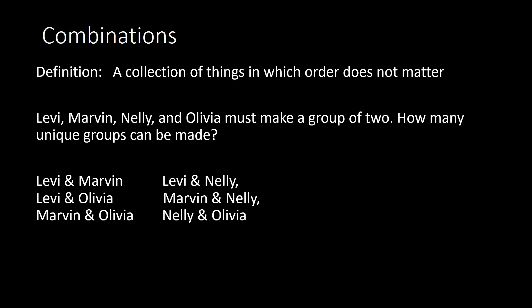We could list all of the possibilities out like we just did, but the objective is to use mathematics to get our solution. I think: I have two people I'm choosing — for the first person, I have four people to choose from: Levi, Marvin, Nellie, or Olivia. So I have four people I can choose first, and then three options to pair with that person. So I have four times three, or twelve possibilities.